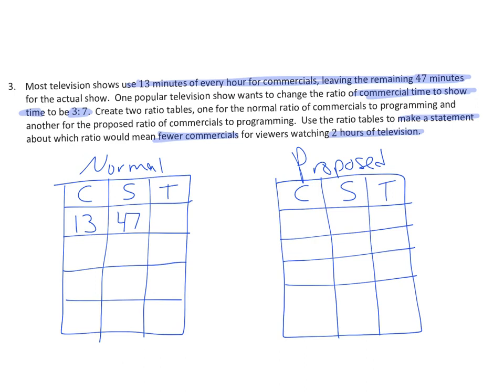And the normal was 13 minutes to 47 minutes of show. And that's commercial to show time. Which of course gives you one hour. And since these are in minutes, right? These are in minutes. I'm going to go ahead and give my answer in minutes instead of hours. I'm going to put it in 60, 60 minutes. And doesn't 13 plus 47 equal 60? Oh yes. Now the proposed is 3 commercial minutes to every 7 show time minutes, which is only 10 total minutes. So to compare them, I have to have the same total time. So I need this to get to 60. Well, how do you get from 10 to 60? Times 6. 7 times 6 is 42, and 3 times 6 is 18. And if you add 42 and 18, don't you get 60 minutes?